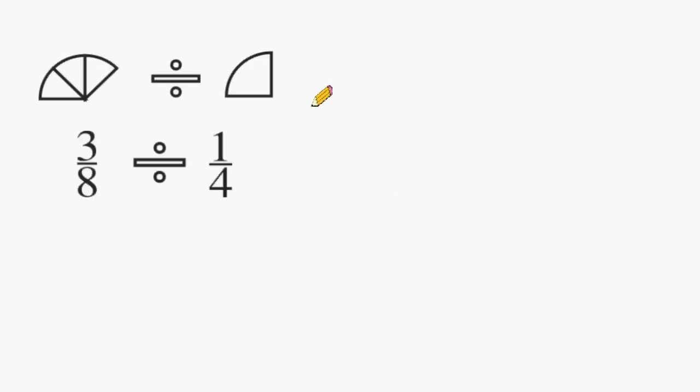With this example, we have a fraction divided by a fraction, specifically 3 eighths divided by 1 quarter. So what we are trying to do is to figure out how many groups of 1 quarter can we fit inside 3 eighths.